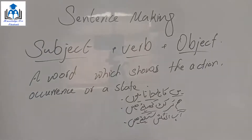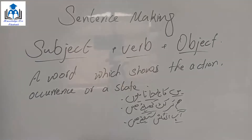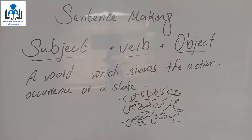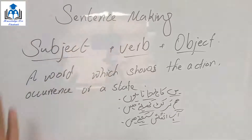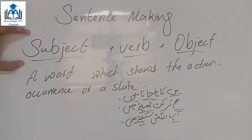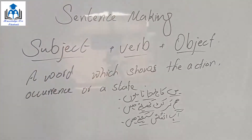'آپ English سیکھتے ہیں' — who does it? 'آپ' (you) = subject. What do you do? 'سیکھتے' (learn) = verb. In short, the verb is whatever action or work is happening in the sentence. First identify who does the action (subject), then identify what action they perform (verb).